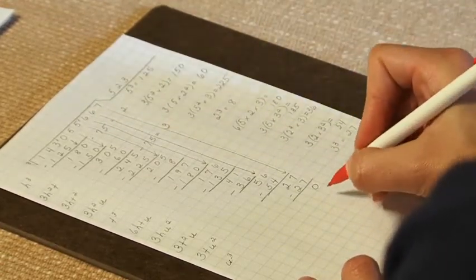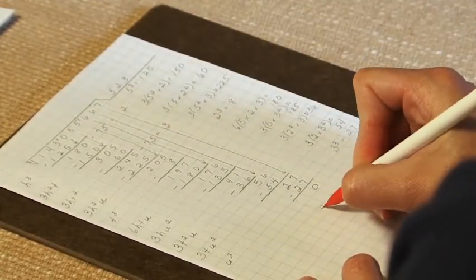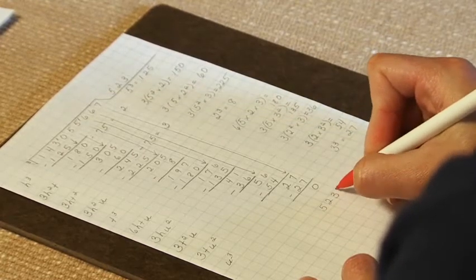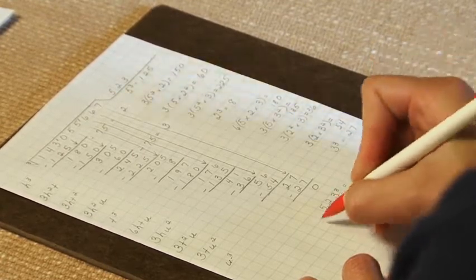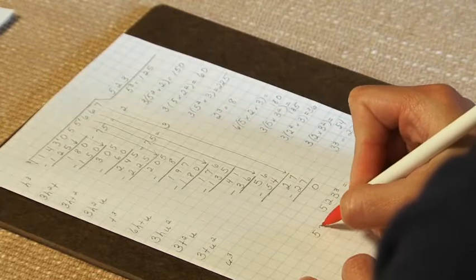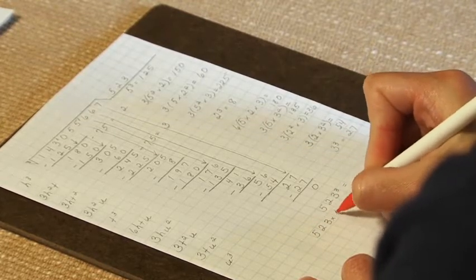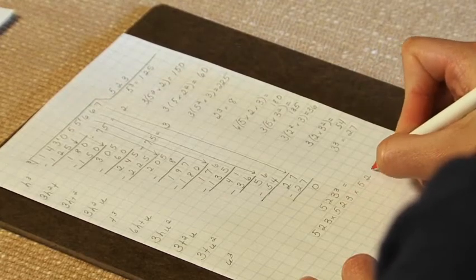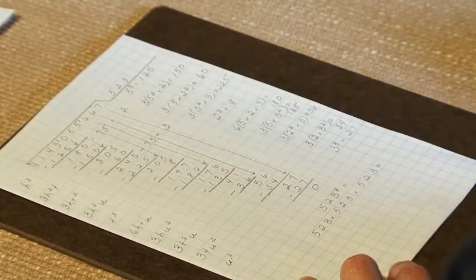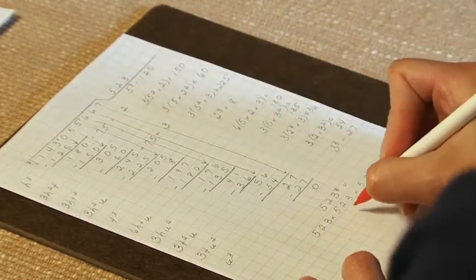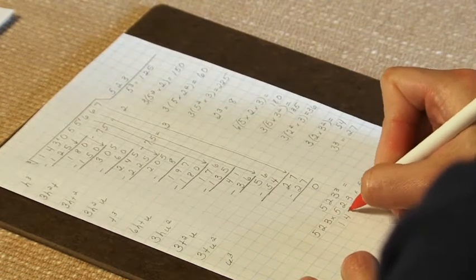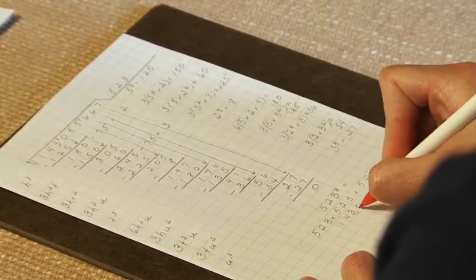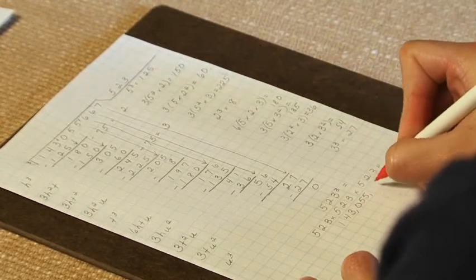The students can check their work by taking 523 cubed, or 523 times 523 times 523. And that will equal 143,055,667.